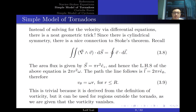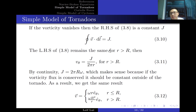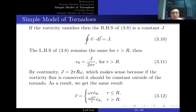For regions outside the tornado where vorticity vanishes, the left-hand side of Stokes' theorem is a constant — not zero, because an integral being zero does not mean the integrand is zero; we must add a constant of integration J. The vorticity flux is conserved and constant outside the tornado region. By continuity and setting J equal to 2π omega R², we recover the same answer as before. This is a nice trick exploiting the geometry of the system — analogous to finding the electric field of a uniformly charged cylinder.